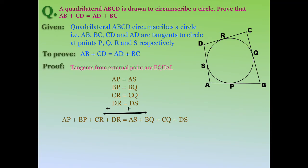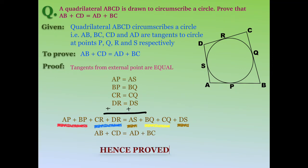In the figure, AP + BP equals side AB, CR + DR equals side CD, AS + DS equals side AD, and BQ + CQ equals side BC. Therefore AB + CD = AD + BC, hence the sum of opposite sides of the quadrilateral are equal.